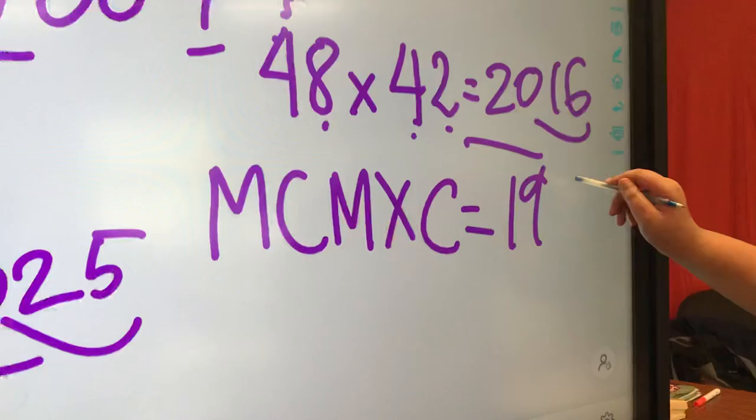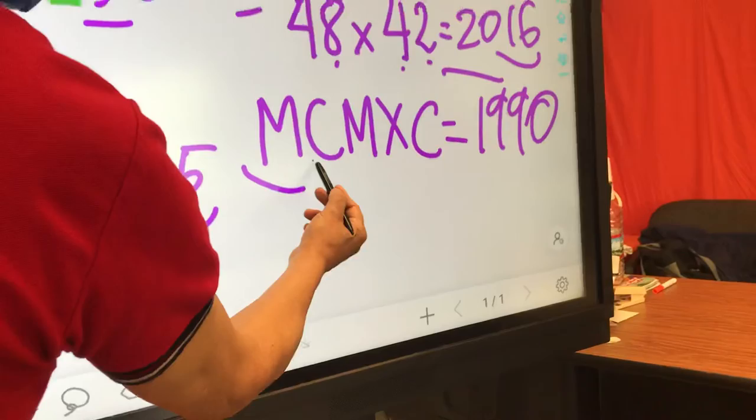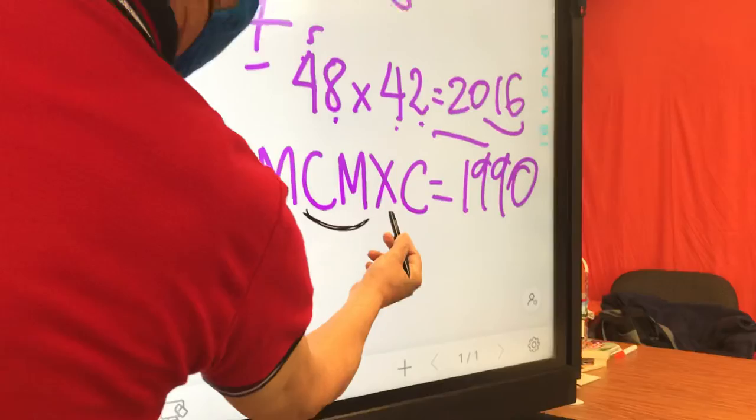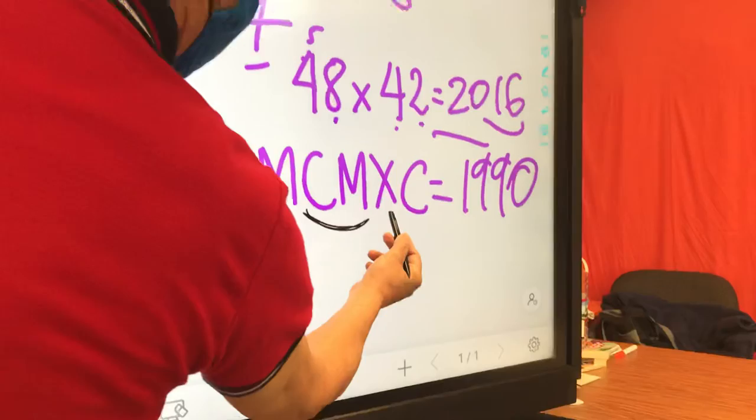What about the Roman numbers? 1,990. Yes, this is 1,000. This is 100 before 1,000, which is 900. And this is 10 before 100, which is 90. Good job.